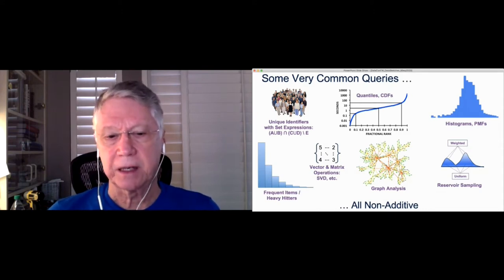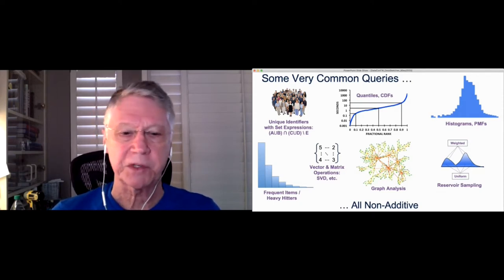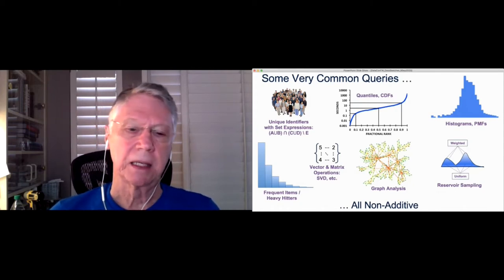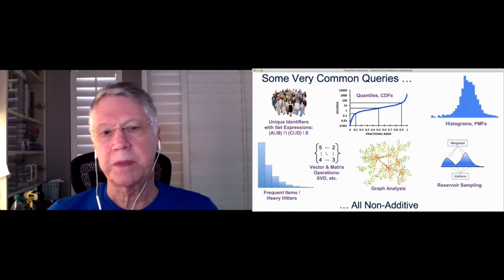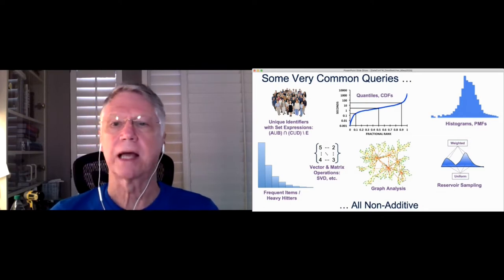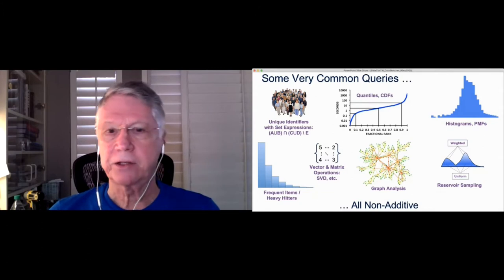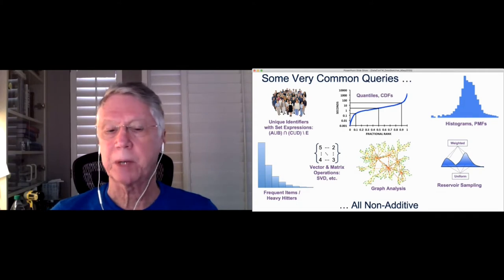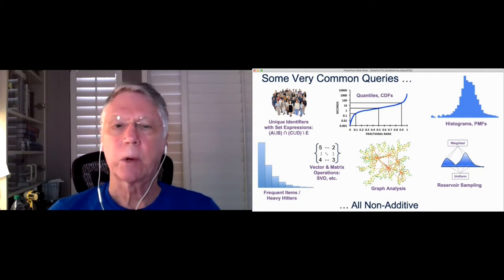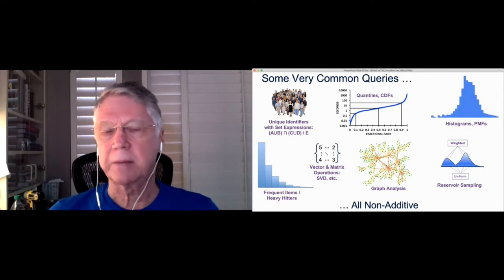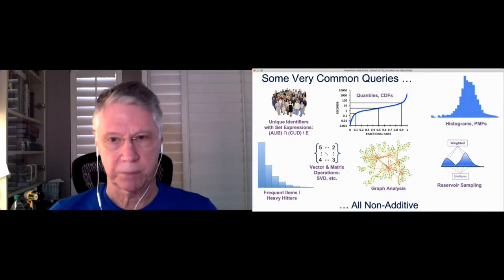The second kind of queries that are very common is quantiles, where we want to say what is the 95th percentile of some data stream or what's the median? What's the 10th percentile? From these quantile numbers, we can get an idea of what our distribution of data really looks like. This is very closely related to the next little icon on the right, which is histograms and probably what we call probability mass functions, where you want to see actually the shape of the distribution.